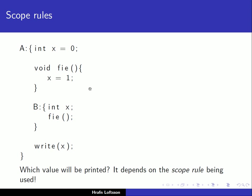Let's start by considering this program here. We have a program that consists of block A. Block A starts with a declaration of an integer initialized with value zero, and it ends with a write statement. It also has nested blocks. There's a block with the label B that declares the integer X and calls the phi function, which is declared inside block A.